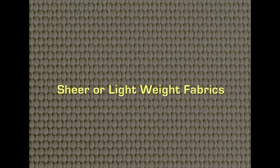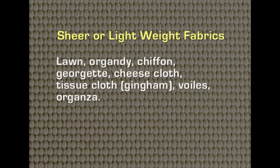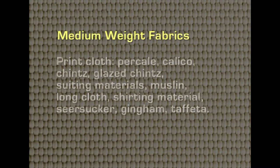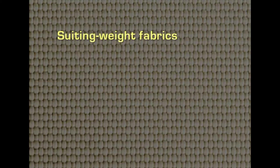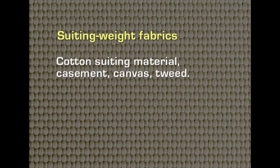Sheer or lightweight plain weave fabrics include lawn, organdy, chiffon, georgette, cheesecloth, tissue cloth, voile, and organza. Medium weight fabrics include percale, calico, chintz, glazed chintz, suiting materials, muslin, long cloth, shirting, seersucker, gingham, and taffeta. Heavy or suiting weight fabrics include cotton suiting, casement material, canvas, and tweed.